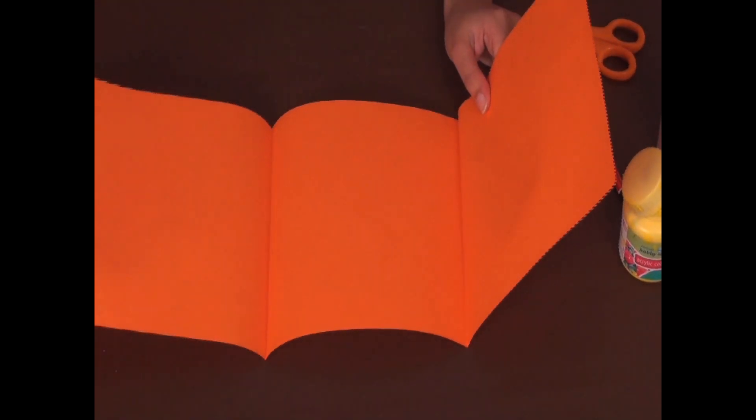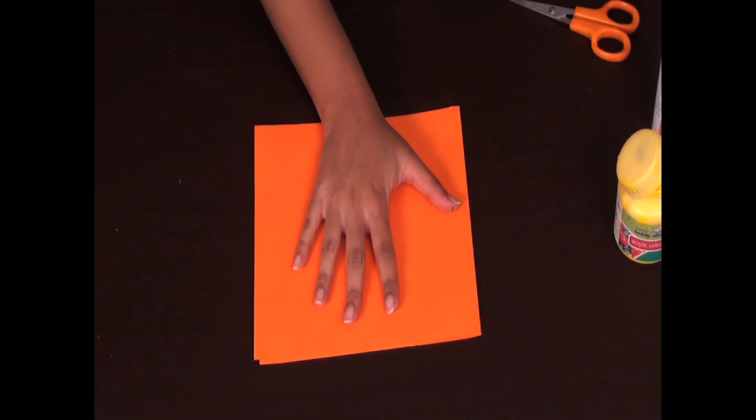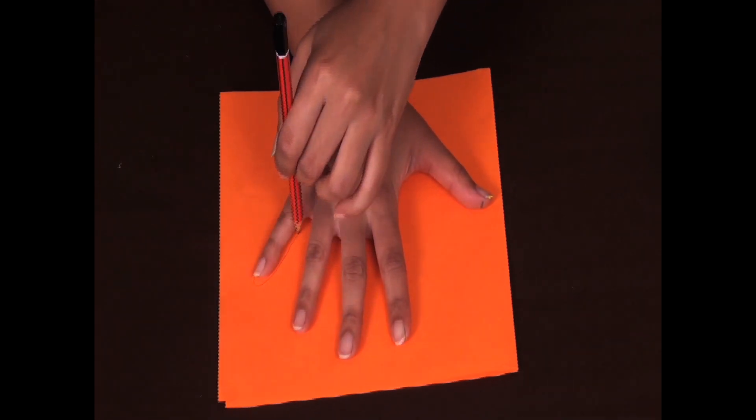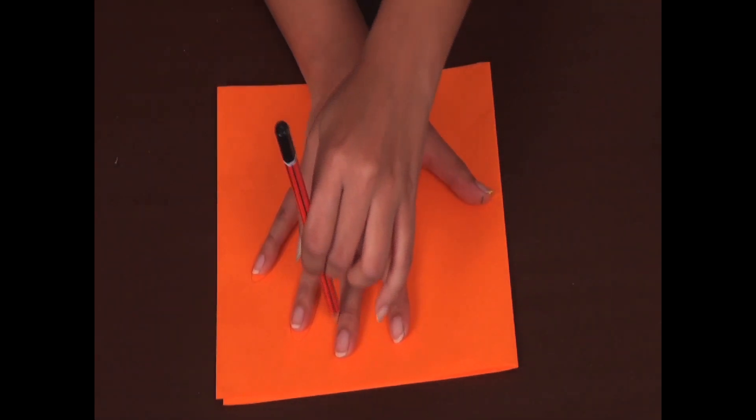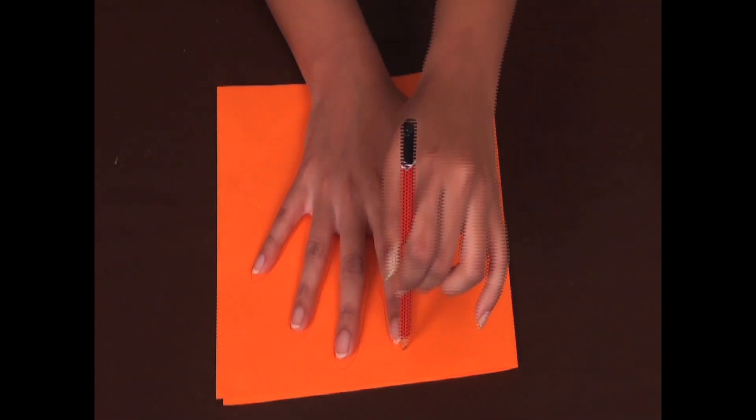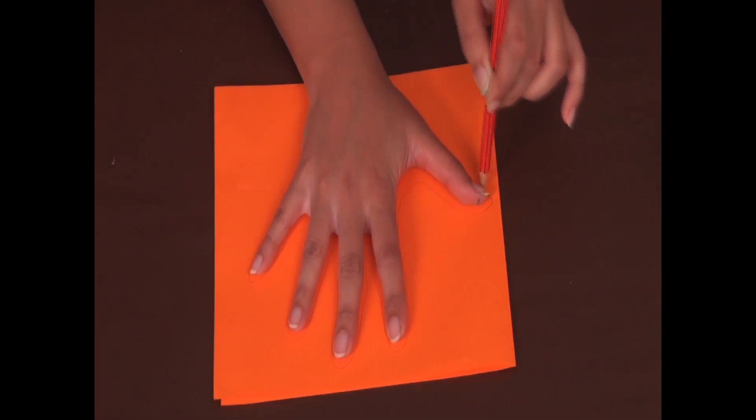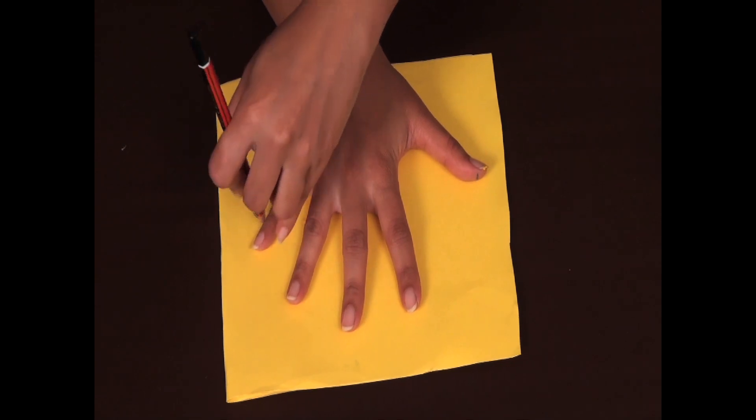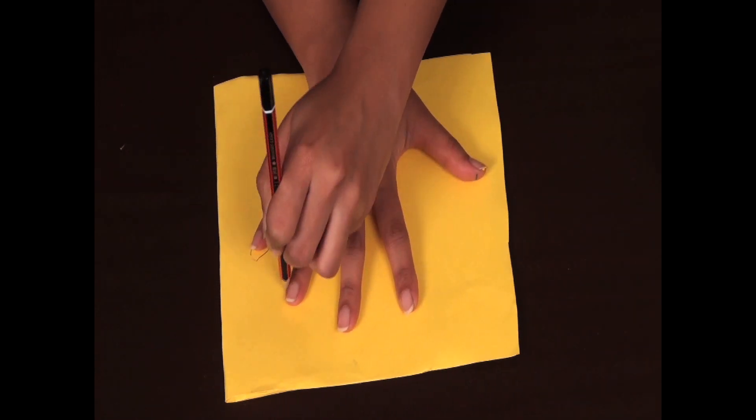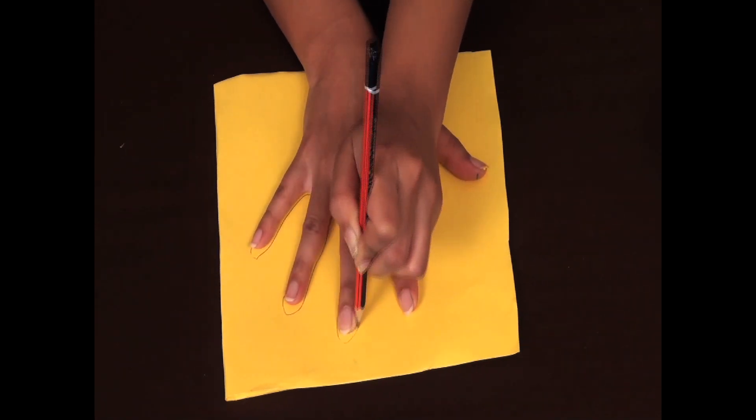Now I have this construction paper that I've folded in four, so that I get four sets of hand prints in one go. Clever, isn't it? Draw the outline of your hand on the orange paper and then on the yellow one. That'll give you four hand prints each of yellow and orange.